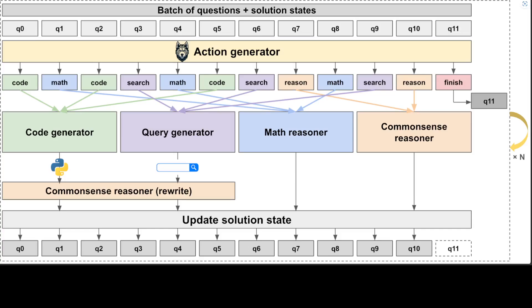They delegate the output to their corresponding expert model, execute the model, and update their solution state based on the output from the expert models. And then they repeat this process over multiple iterations until the agent reaches the final answer for all the questions.